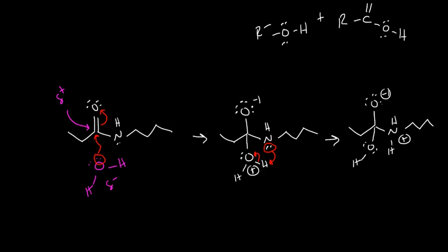And the final step, the lone pair from this oxygen falls down, forms a double bond again, and this bond breaks, creating our amine. So our products here are going to be a carboxylic acid and an amine.